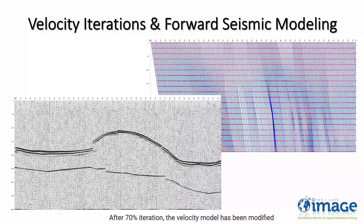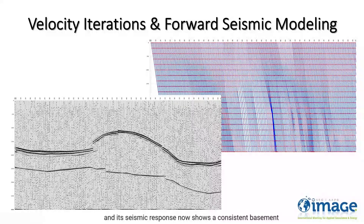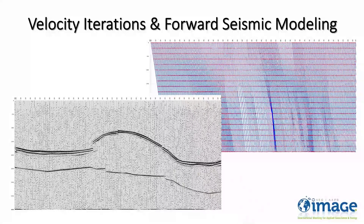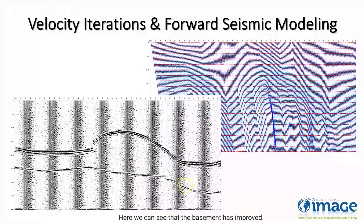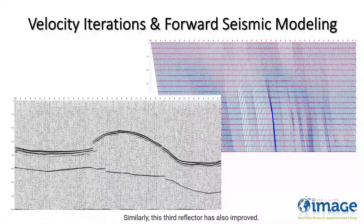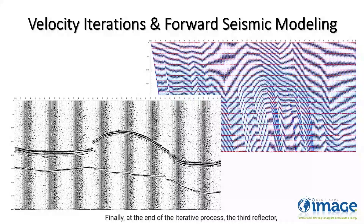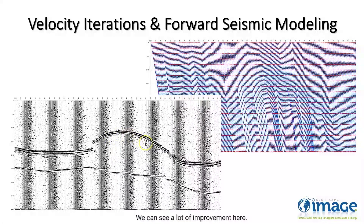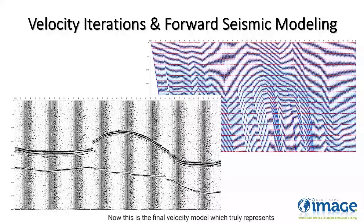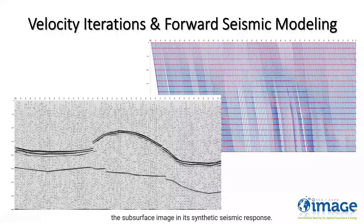After 70% iterations, the velocity model has been modified, and its seismic response now shows a consistent basement, and the third reflector has also improved. Here we can see that the basement has improved, and this third reflector has also improved. Finally, at the end of the iterative process, the third reflector as well as the basement have further improved. This is the final velocity model, which truly represents the subsurface geologic structures, and therefore generates the subsurface image in its synthetic seismic response.